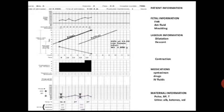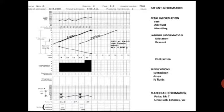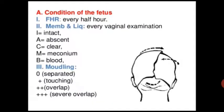Additional partogram components include contraction duration and frequency, medication such as oxytocin and drugs, IV fluid, and maternal information including pulse, blood pressure, temperature, urine albumin, ketones, and volume.